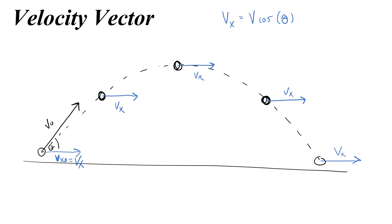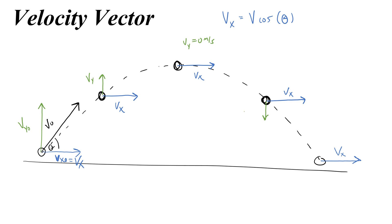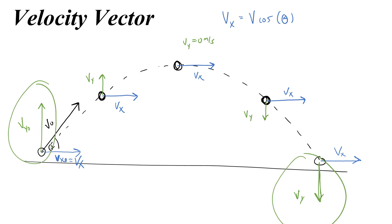Gravity is pulling down on the object, so that affects the y velocity. We call the initial y component vy0 because it's going to change as gravity pulls the object down. First it decreases in magnitude, then at the top vy is 0 because gravity will have slowed the object in the vertical direction to a stop. But there is still a horizontal x velocity at that point. Then as the object goes down, the y component gets bigger. At equal heights, the velocity components are equal in magnitude but opposite in direction — a really helpful thing we learned from free fall problems.